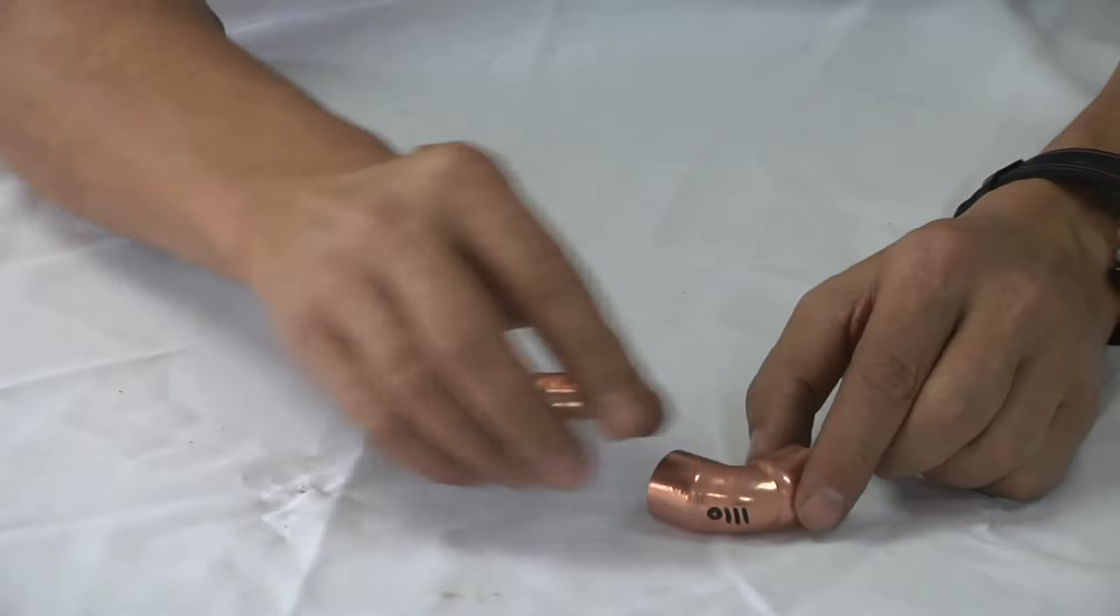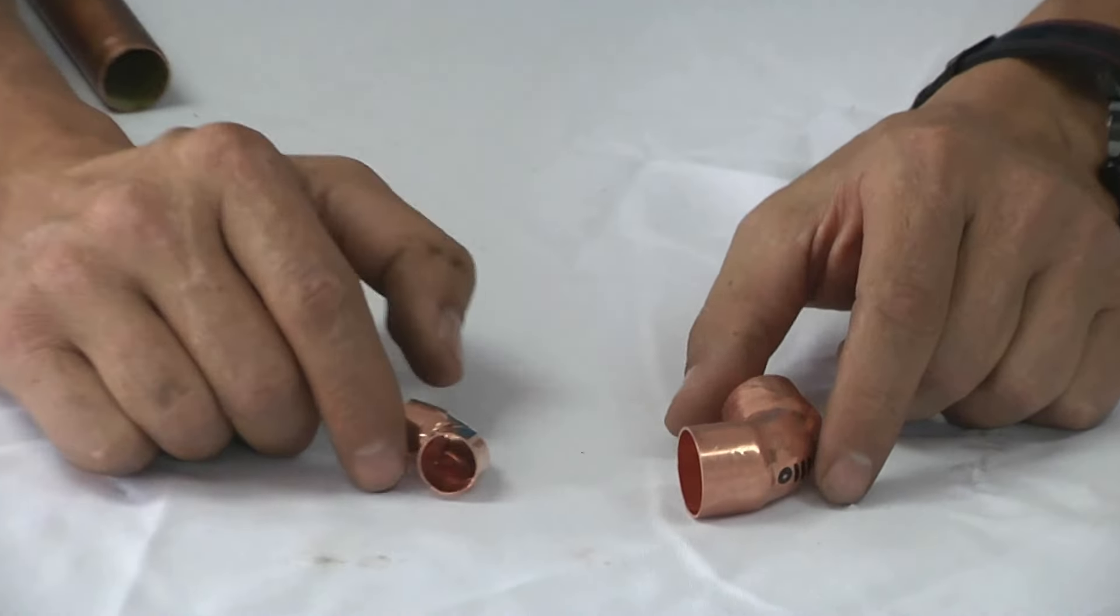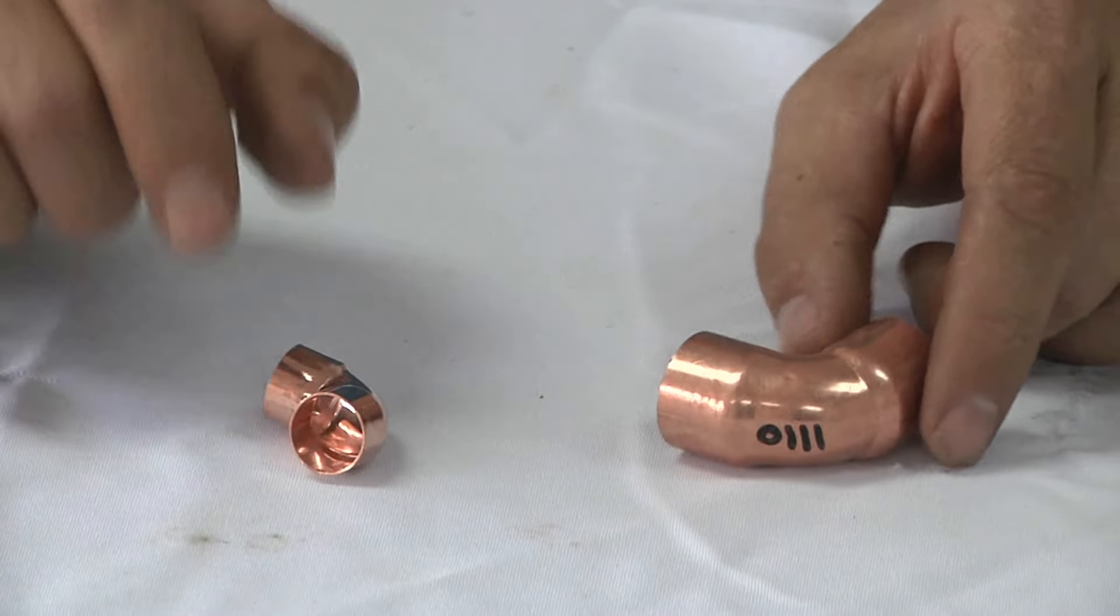Then we have a 22 millimeter elbow and a 15 millimeter elbow. This is obviously to change direction.